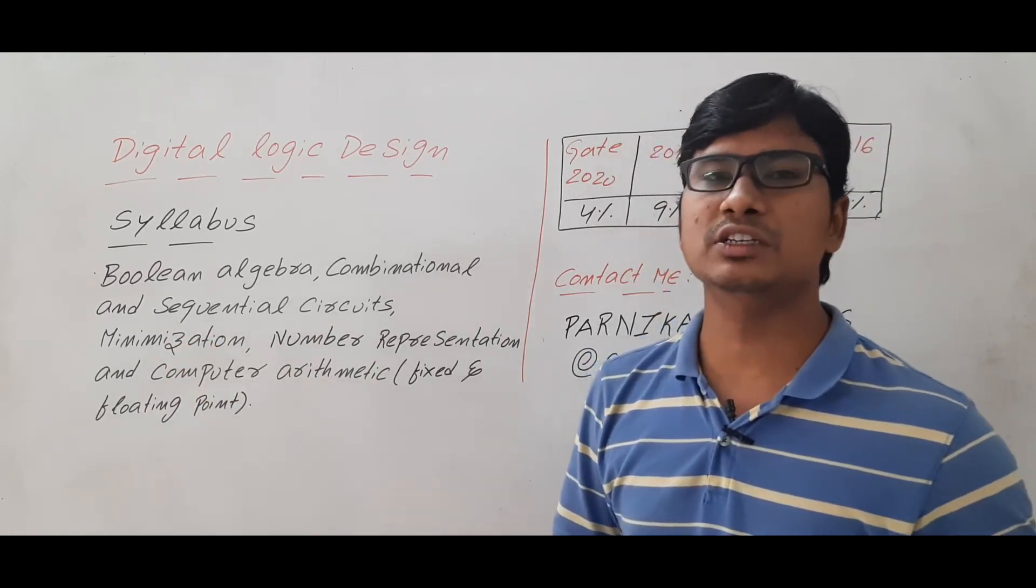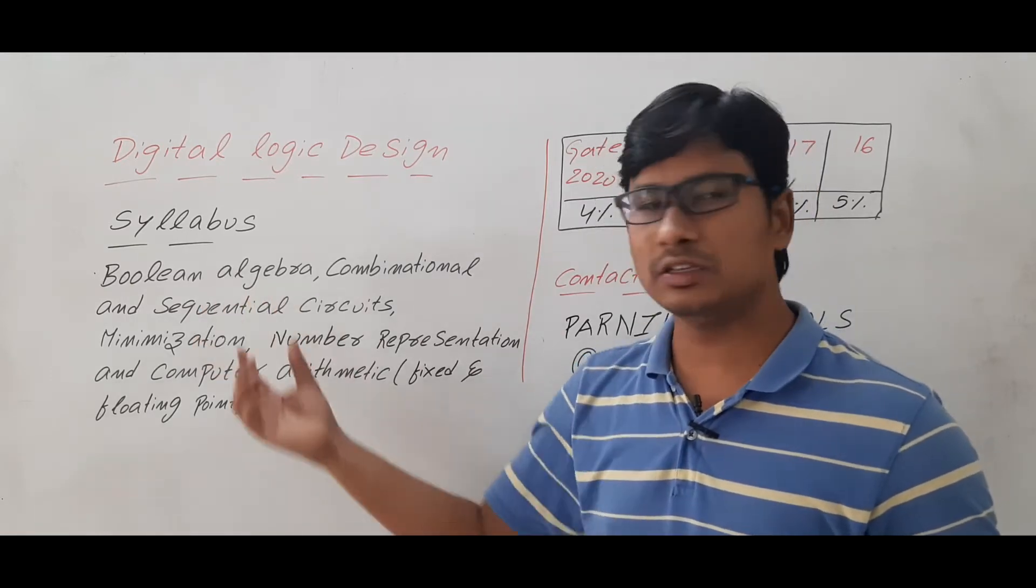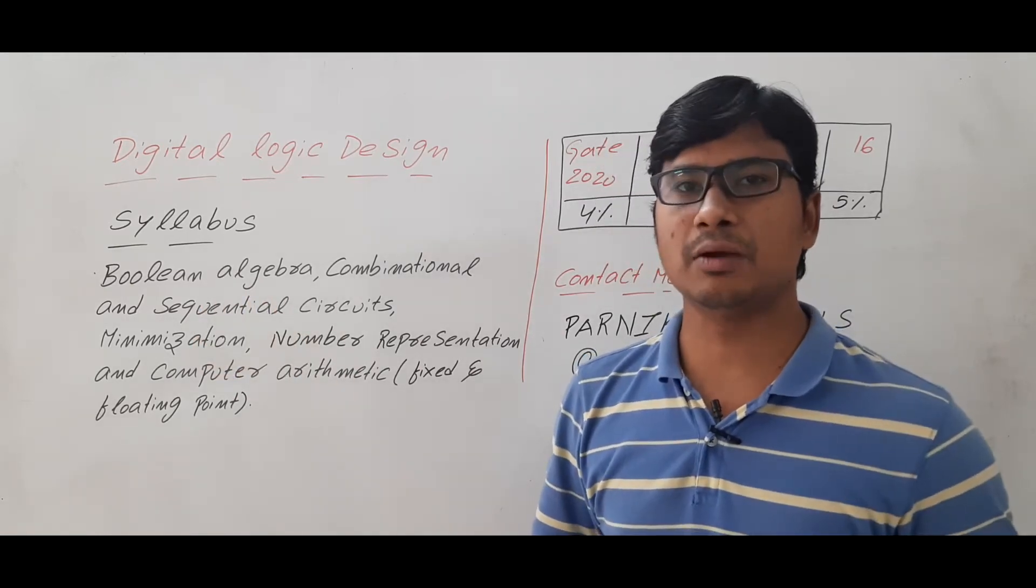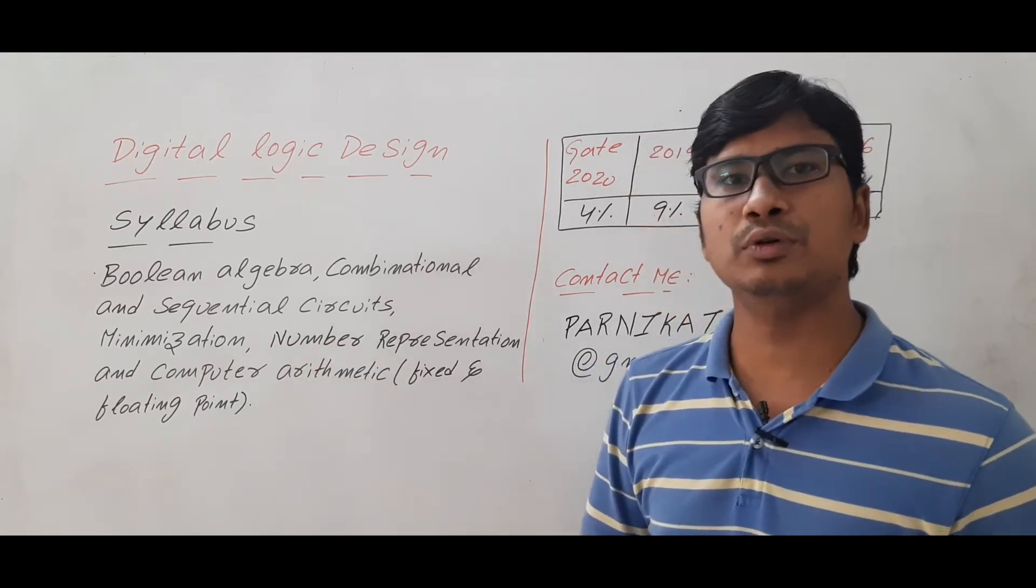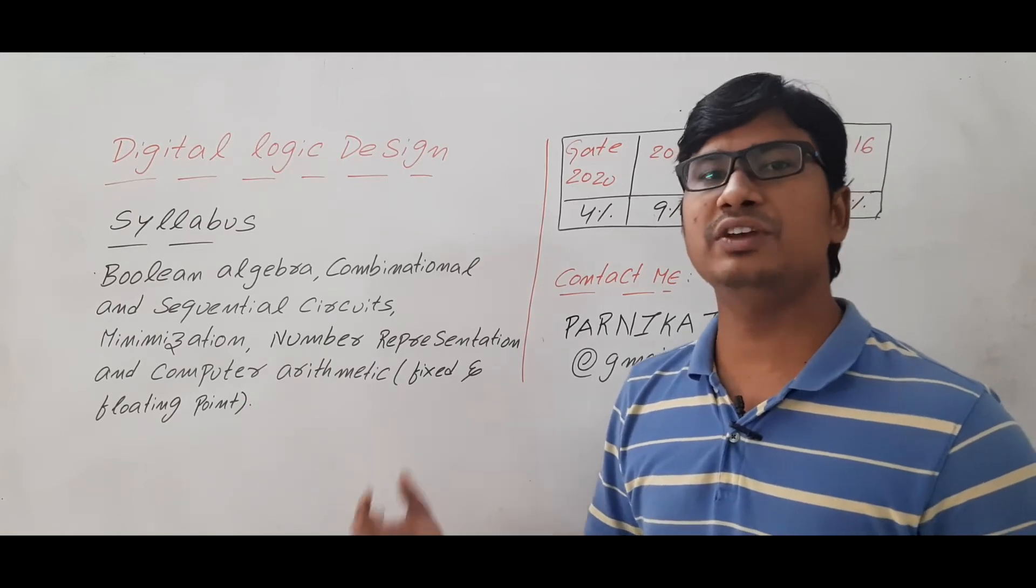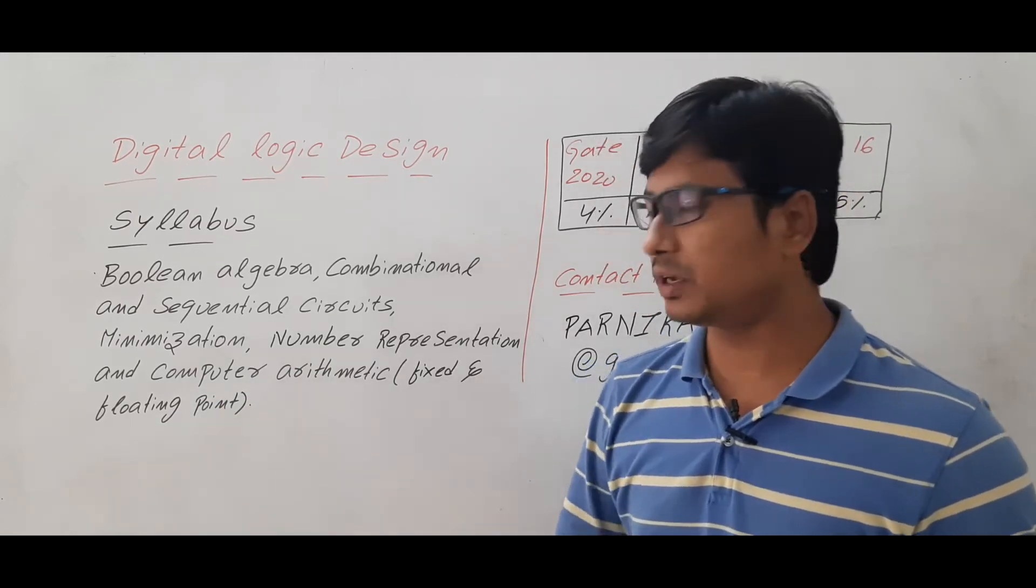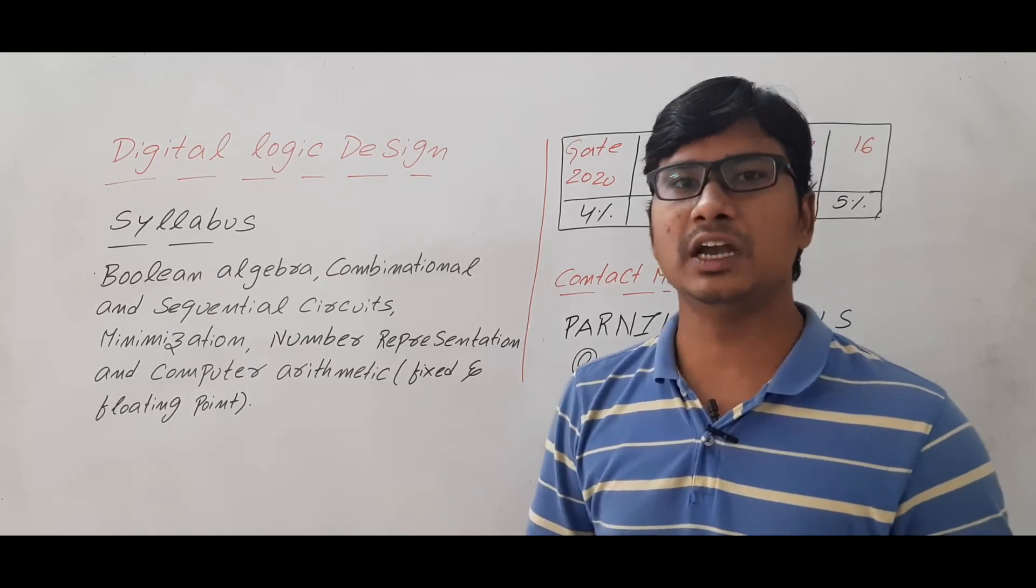Then I will discuss minimization, how to minimize a Boolean expression using Boolean algebra and K-maps. Then we will discuss number systems and computer arithmetic related to fixed and floating-point numbers. In floating-point I will discuss single precision and double precision.